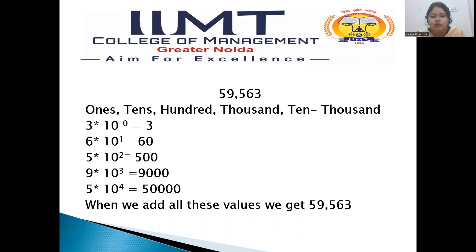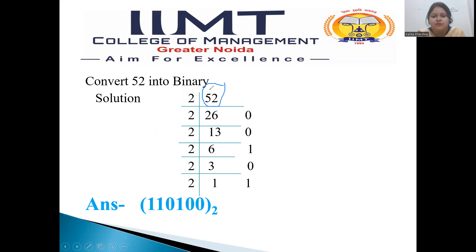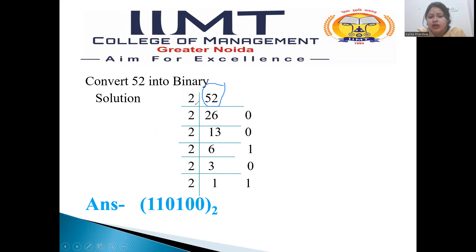Now we will move forward to what is binary. I have given a decimal number and I will convert it into binary digits. I have taken 52 as an example. We will divide 52 by 2, because we are converting it into binary and the base of binary is 2. So when we divide 52 by 2, it will go 26 times and the remainder will be 0. As it is an even number, the remainder will be 0. If it is an odd number, the remainder will be 1.